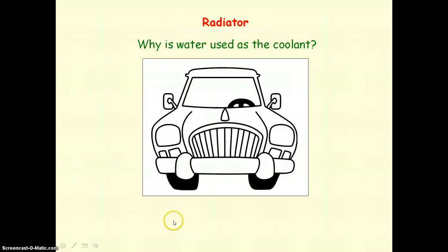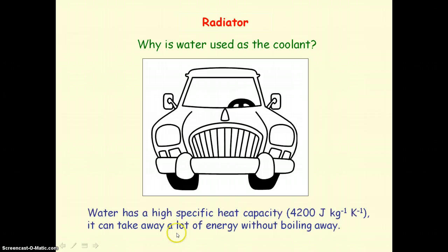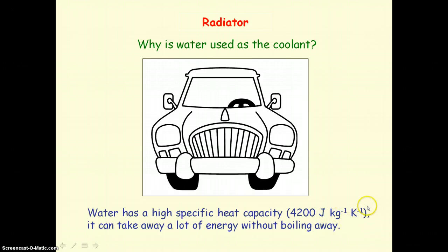So why is water used as a coolant? It's because of its very high specific heat capacity. Its value is 4200 joules per kg per Kelvin, which means that to raise the temperature of 1 kg of water by 1 Kelvin we would need 4200 joules. So we need a lot of energy to bring water to its boiling point.